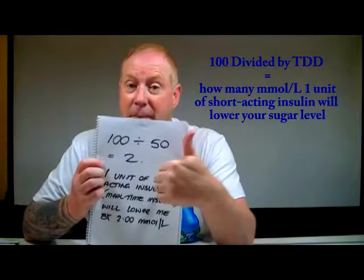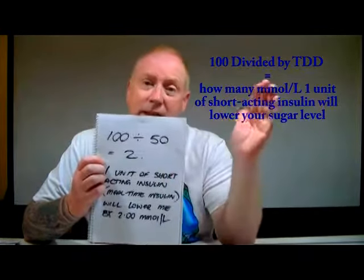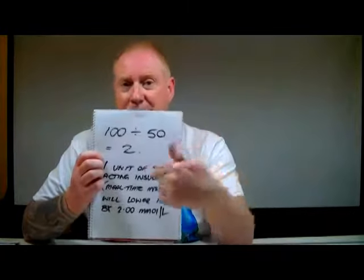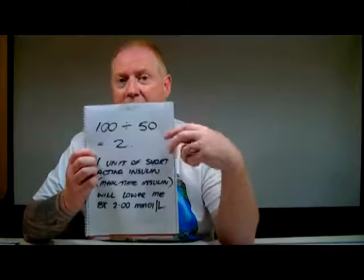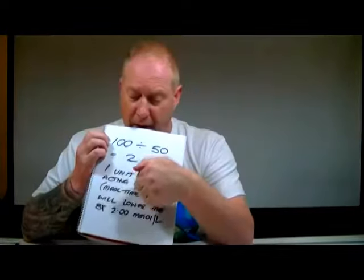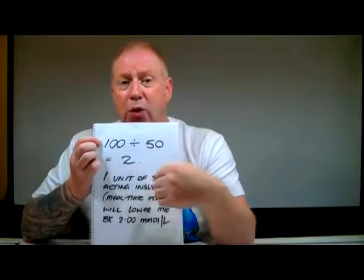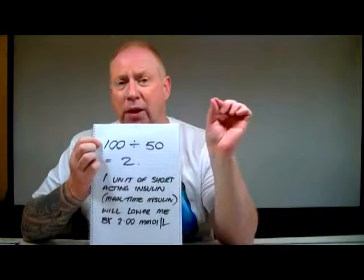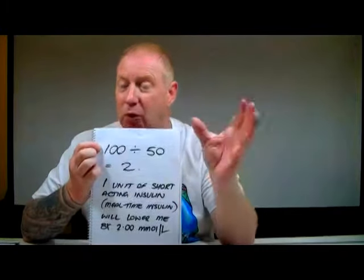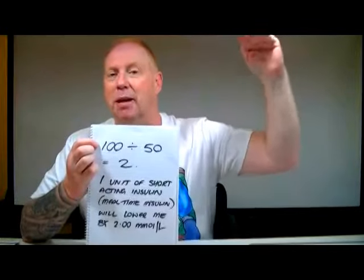For this example, it was 50 units — 30 units of Lantus, plus 6 plus 6 plus 6, which is 18, and I've just rounded it up to 50 units for simplicity. So 100 divided by my total daily dose of 50 gives me 2. That means 1 unit of Novorapid or short-acting mealtime insulin will lower my sugar level by 2 millimoles.